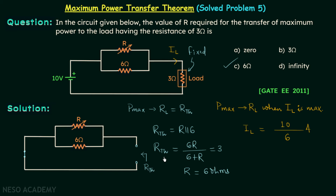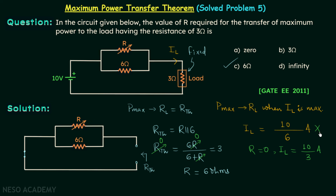Now the main concept of case 2: Rth equals 6R divided by (6 plus R), and since R is variable, Rth is also variable. I_L will be maximum when Rth is minimum, and Rth can be 0 when R is equal to 0. When R equals 0, I_L equals 10 divided by 3 amperes, which is more than 10 over 6. So R equals 6 ohms does not give maximum current, and therefore maximum power will not be delivered to RL at R equals 6 ohms. That answer is not correct.